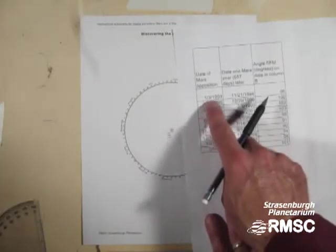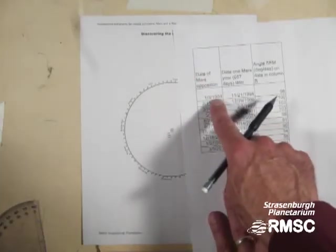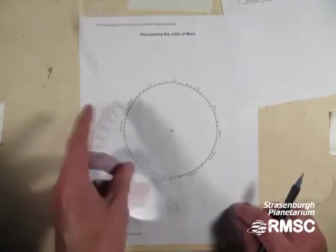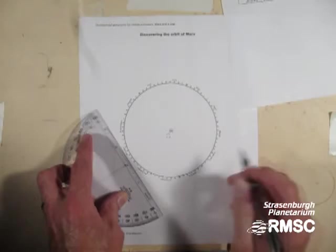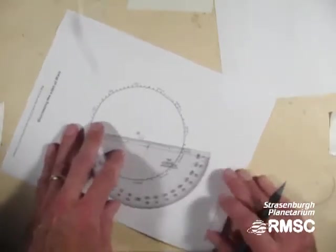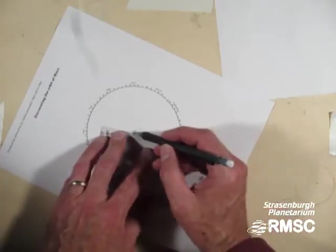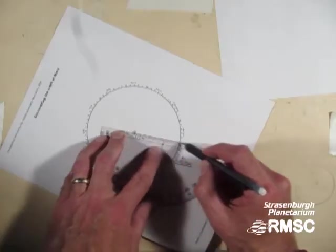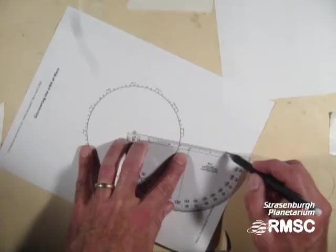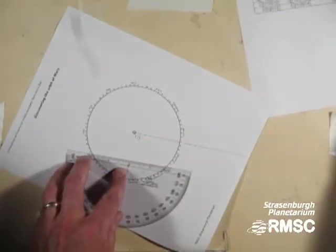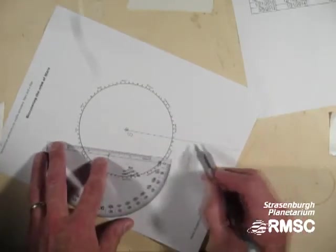On January 3rd, 1993, Mars was seen to be in opposition. So let's find where the Earth is on January 3rd. Let's see, that would be right about there. And if Mars is in opposition, that means I can draw a line from the Sun out through the Earth and hit Mars somewhere. So I will carefully draw this line. So on January 3rd, 1993, Mars was in opposition, so I know on that date Mars is somewhere on that line. I don't know where.